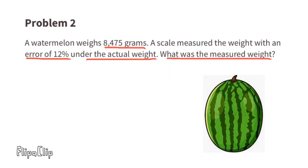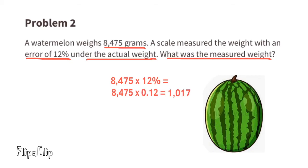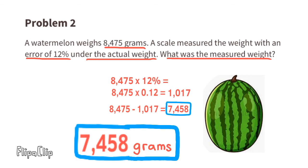Problem 2 — a watermelon weighs 8,475 grams. A scale measured the weight with an error of 12 percent under the actual weight. To find the measured weight, multiply 8,475 times 0.12, which equals 1,017. Then 8,475 minus 1,017 equals 7,458 grams — the measured weight, which is 12 percent less than the actual weight.